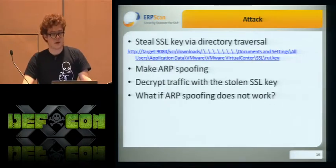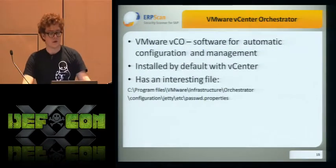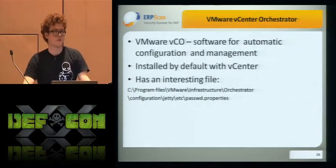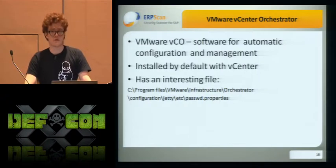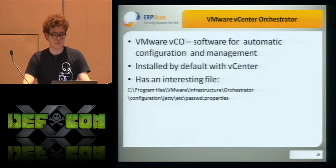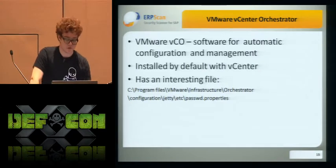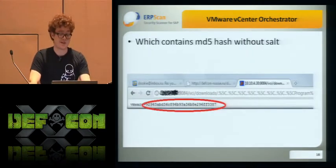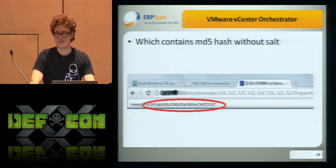But what if ARP spoofing doesn't work? So we did a little bit of analysis and found vCenter Orchestrator — it's software for automatic configuration and management of vCenter, and it's bundled by default with vCenter. It has interesting files like configuration and password properties files. Each one contains an MD5 hash without a salt.